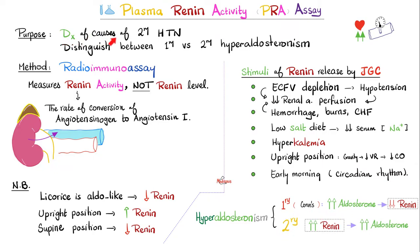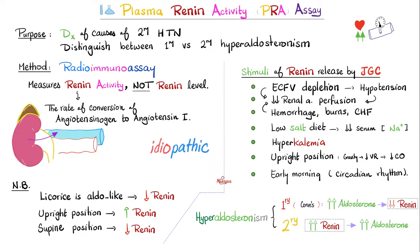When we know the cause of hypertension, it's called secondary hypertension. When we have no idea what caused the hypertension, we call it primary hypertension or idiopathic hypertension. The plasma renin activity assay helps identify the cause.